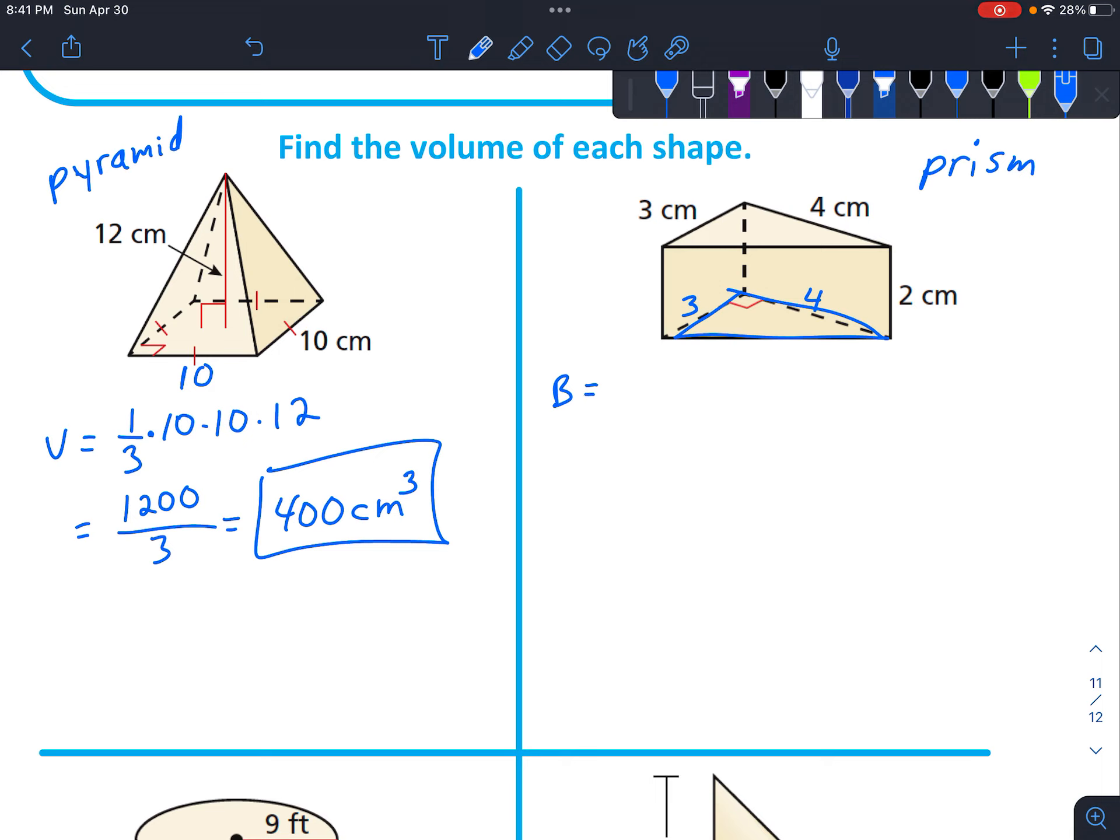So just for the base part, we're going to have one-half times base times height, which is 12 divided by 2, which becomes 6. And then the volume is the base times the height. So I know we're talking about two different bases. Now we're talking about the area of this base right here, which is 6 times the height, which is 2.